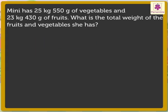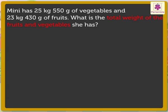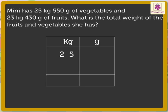First, we read this story. What information does it give? Minnie has 25 kilograms 550 grams of vegetables and 23 kilograms 430 grams of fruits. Now, let us see what we have to find out. What is the total weight of the fruits and vegetables she has? Here, we have to add 25 kilograms 550 grams and 23 kilograms 430 grams to find the total weight.